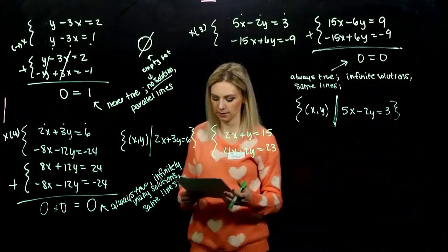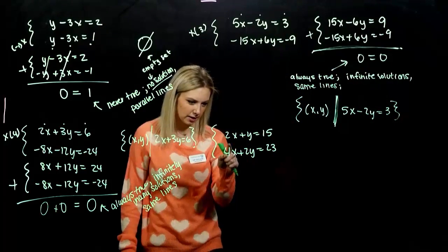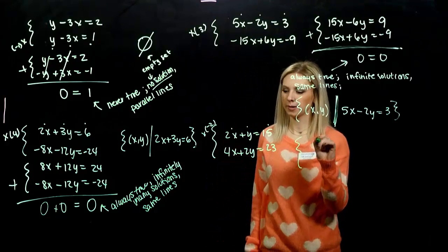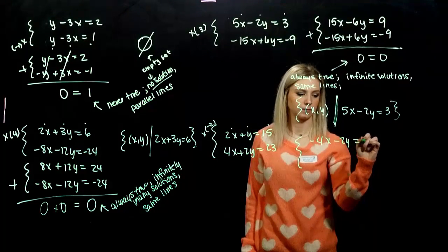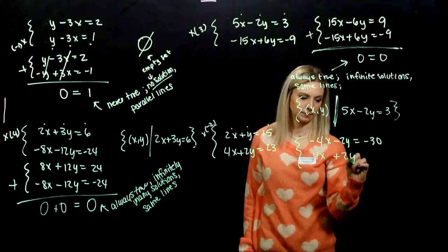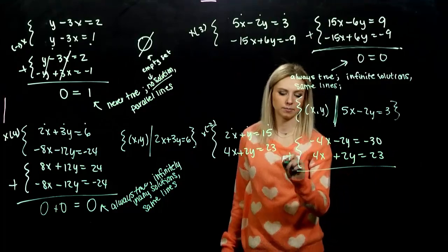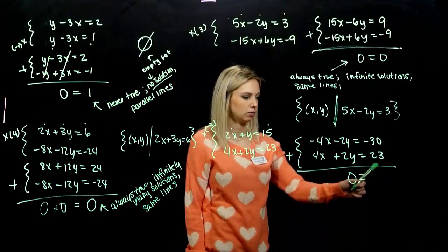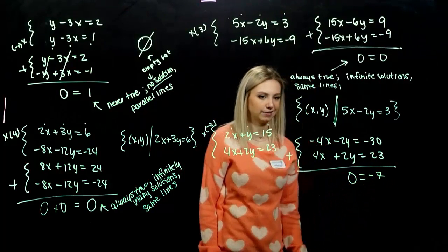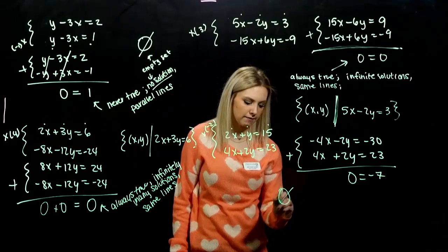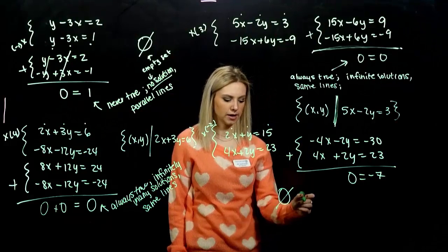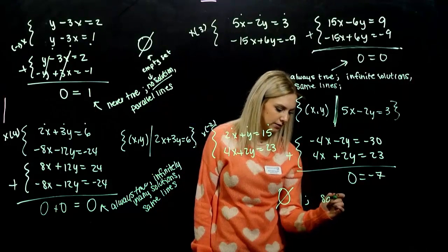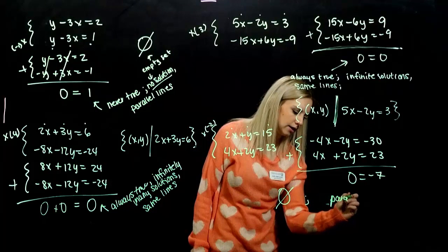In the second system, if I want to eliminate x, I'll alter the top one by a factor of negative 2. So, every single term multiplied by negative 2. And the second one was unchanged. And what do we get when we add those together? X's are gone. Y's are gone. So, I've got 0 on the left. And what on the right? Negative 7. That's never going to be true. So, we don't have any solutions. And what do those lines look like? Changing at the same rate at the same time, but they start at different heights. So, these are not the same lines. Parallel. Parallel lines.